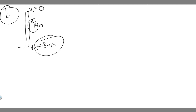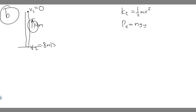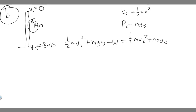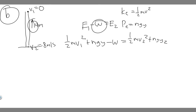We're going to solve Part B similarly to the last one. Recall the formulas: potential energy mgy and kinetic energy ½mv². We do the same thing: take the energy in the beginning, but this time we have to account for the work done by air resistance. The equation becomes: E₁ − W = E₂, meaning the energy at the beginning minus the energy lost due to air resistance equals the energy at the end. We're trying to solve for W, which will let us solve for the friction force.